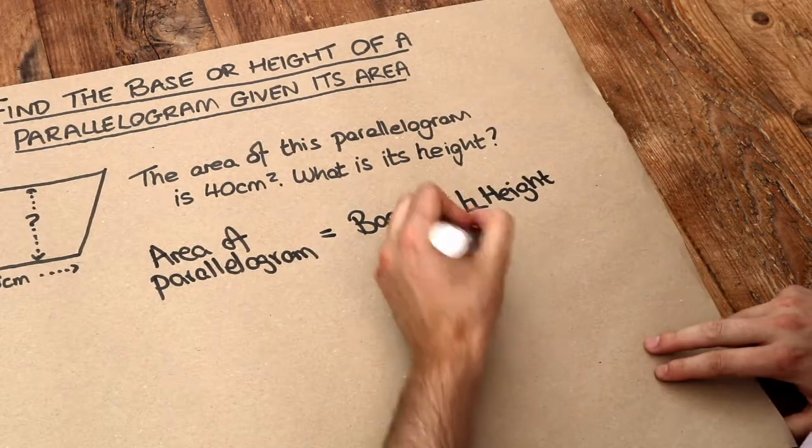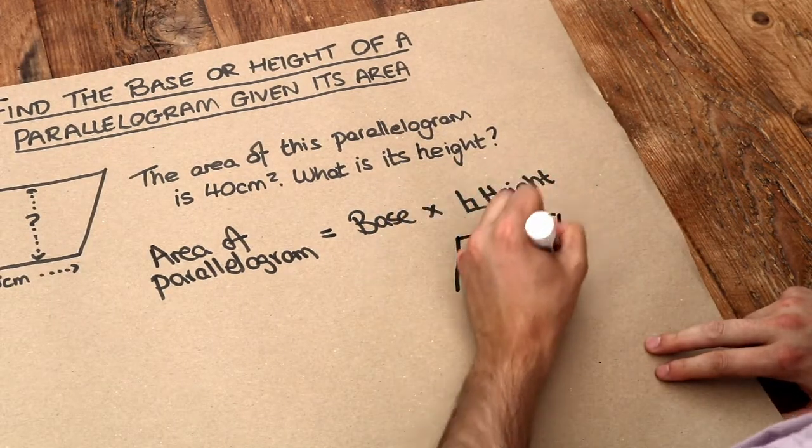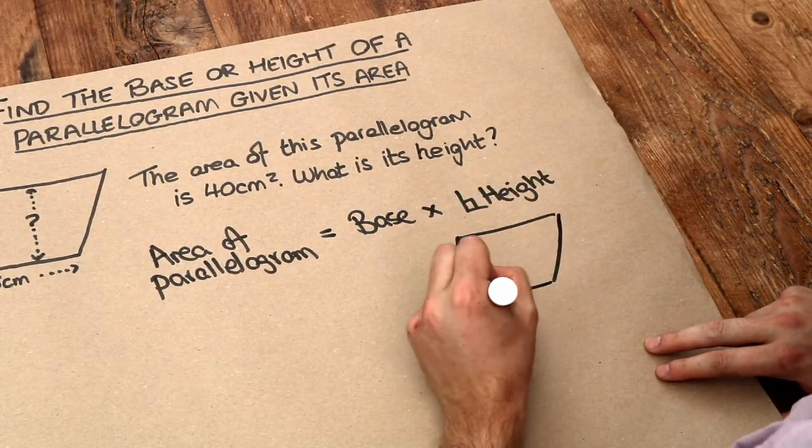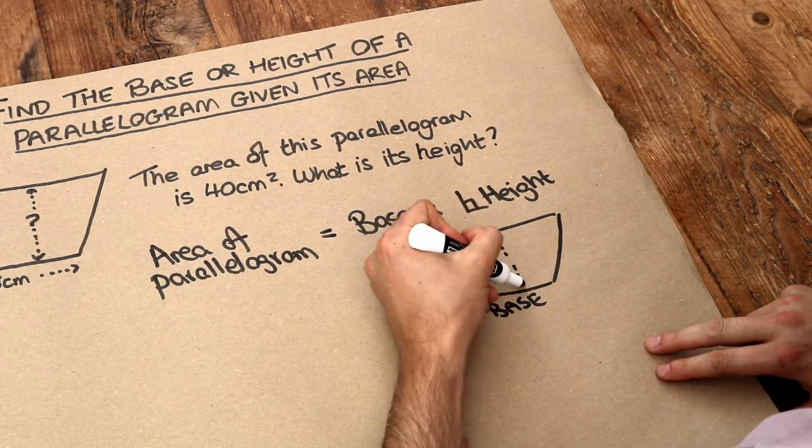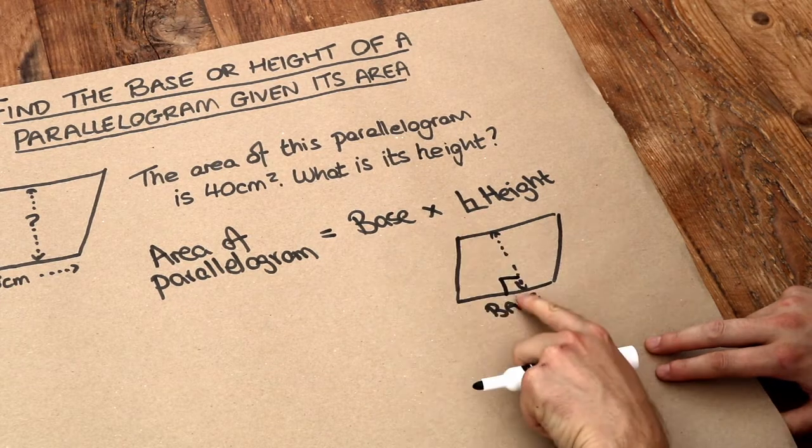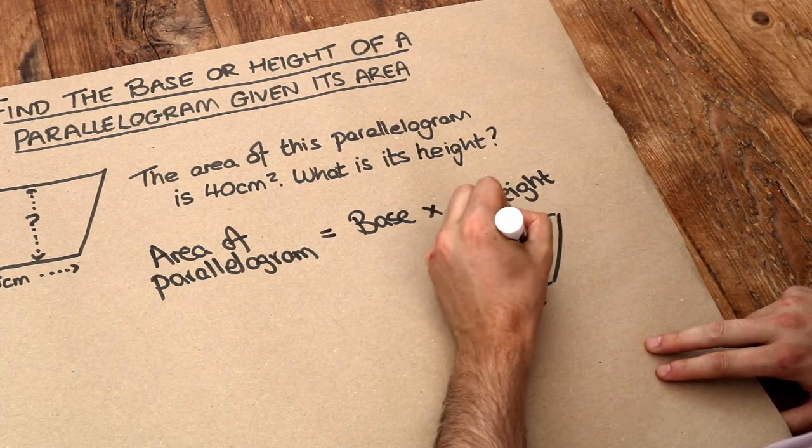And what I mean by the perpendicular height is if I drew a parallelogram here, if this was the base down here, then the perpendicular height is the height of the shape that is at right angles to the base. So this would be the height here.